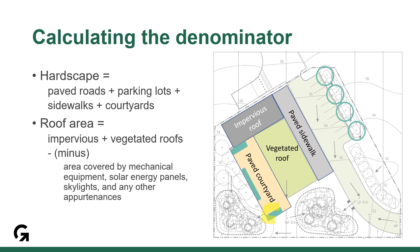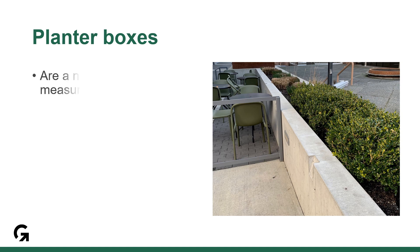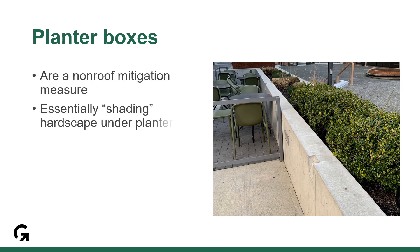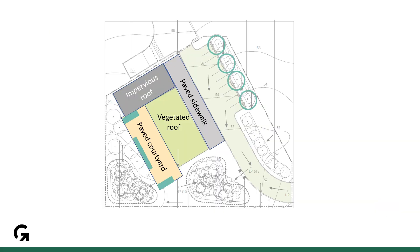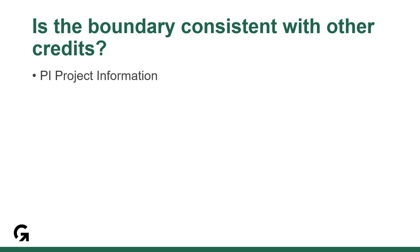One common area that gets missed in this calculation is planter boxes, sketched here in green within our courtyard. Where you have planter boxes covering the hardscape and acting as shade, you will need to include the area under those planter boxes in your total project paving area. For our total paved area, we want to be sure we include the total paved courtyard, including the area covered by these green planter boxes.